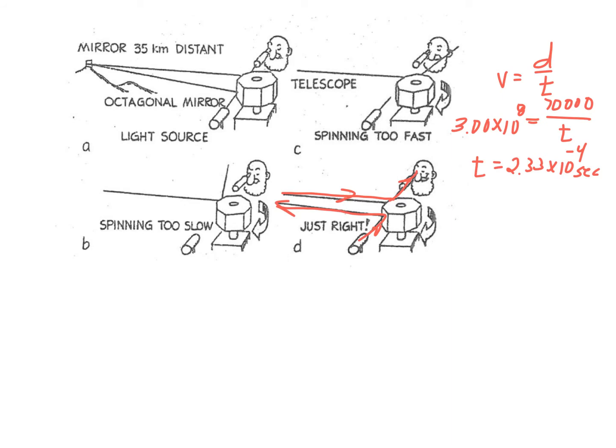Now, once we know the time is that, what we know is that the mirror has to spin one-eighth of a turn in that amount of time. In other words, if I do the following, we have essentially one-eighth of a rotation in that time, 2.33 times 10 to the negative fourth seconds.